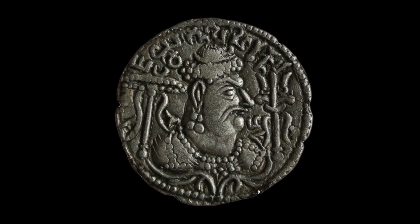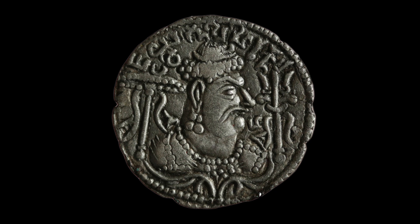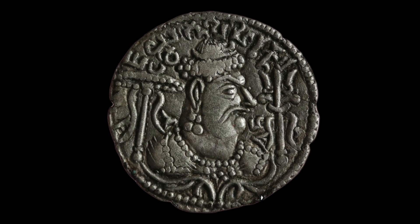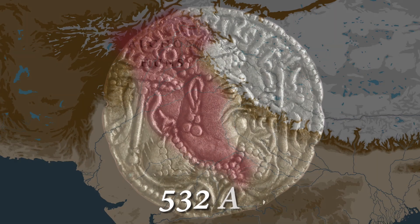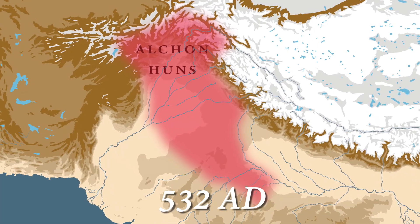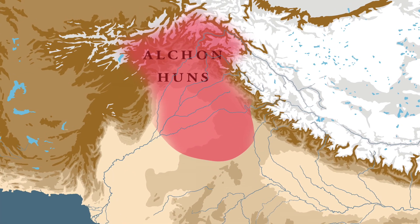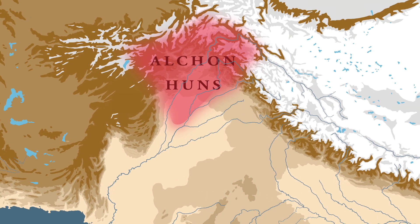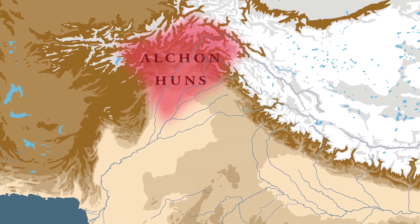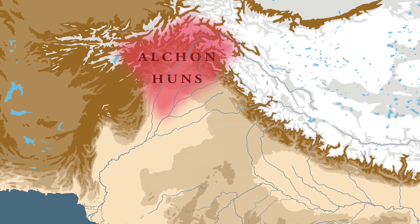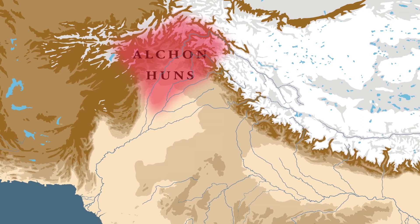Tormaana was defeated during the end of his reign, and when his son Mihirkula succeeded him, he suffered a significant defeat at the hands of an Indian power around 532 AD. This defeat meant that the Huns retreated back to their original base in Gandhara and Punjab.